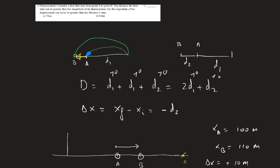The animal can go to the right first, then come back, ending at point B. It travels distance D1 to the right, another D1 coming back, then moves through distance D2. The total distance the animal travels is D1 plus D1 plus D2, which is bigger than the magnitude of displacement, because the displacement in this case is just D2.